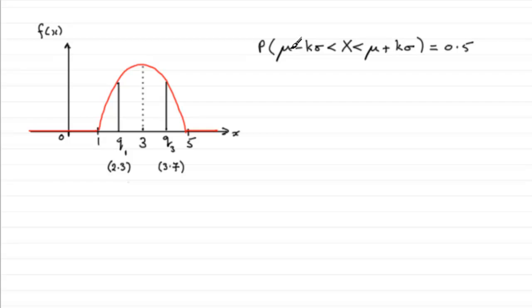Now we know that the mean mu is 3, let's just put that in, we've got 3 is that central value there, that's mu. So what is mu plus k sigma, what is mu minus k sigma?